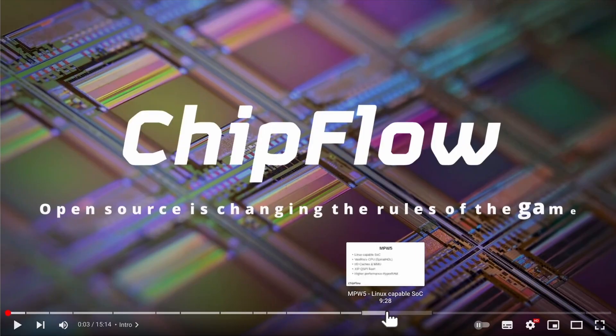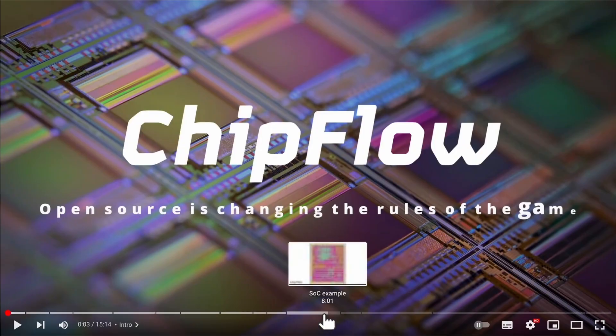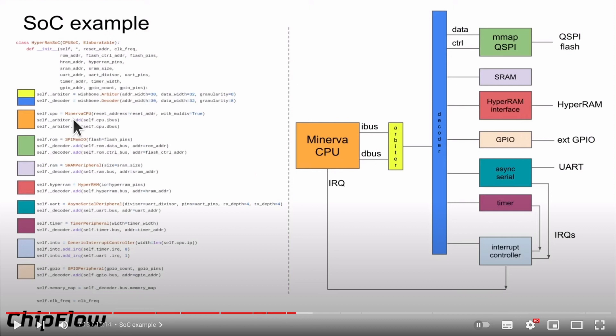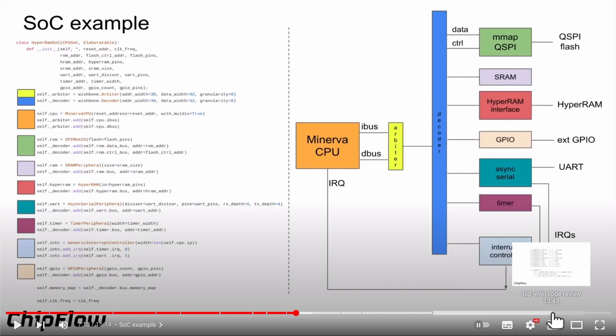Chip Flow has launched their first video, done by Myrtle, Gatecat, and Shah — I did the editing. It's a really great talk by Myrtle; maybe my favorite part is where they're talking about using Amaranth to build quite a complicated SoC, and then the update at the end on MPW6 where Myrtle shows how Chip Flow has made an application for an SoC that can boot Linux. Make sure to check the video and subscribe to the new channel.